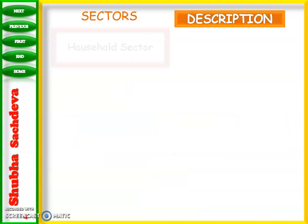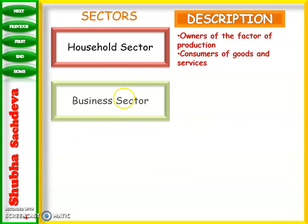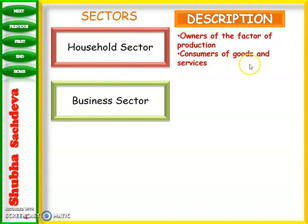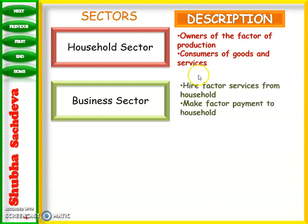The household sector consists of owners of the factors of production — land, labor, capital, and entrepreneur. These factor services go from the household sector into the business sector. The household sector also acts as a consumer of goods and services. The business sector hires factor services from households and makes factor payments to the household.